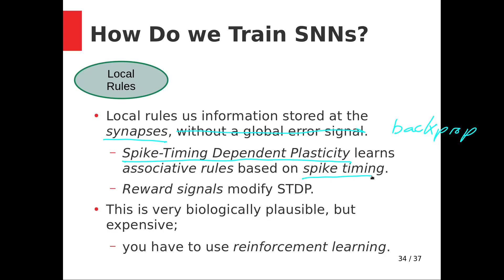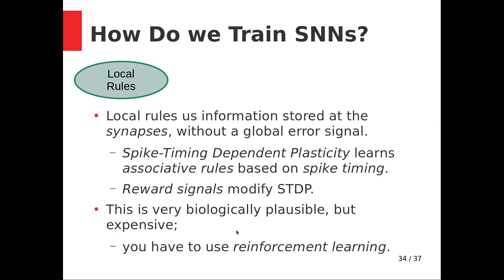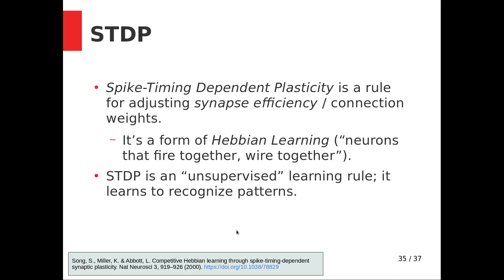STDP is a learning rule based on spike timing. It is very biologically plausible, but it's expensive and it's not always clear how to do it well. It gets into reinforcement learning, which means the network must spend a lot of time experimenting with the environment — you have to simulate it for a long time and have a mechanism that makes it explore different activities, creating an exploration trade-off. We don't yet have a great way to do that time-efficiently.